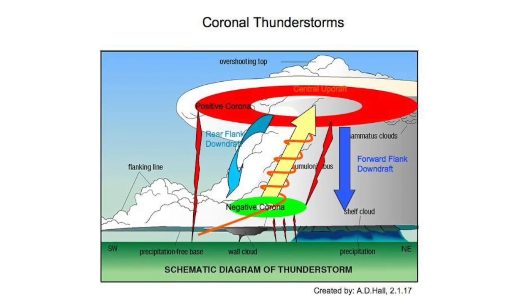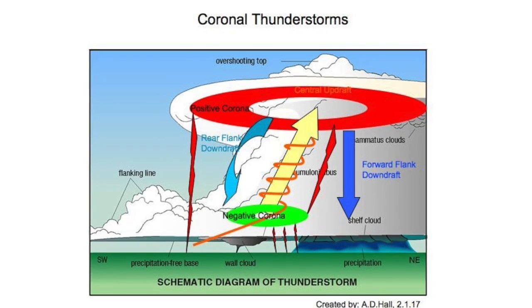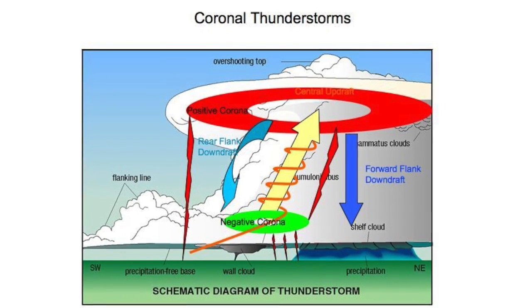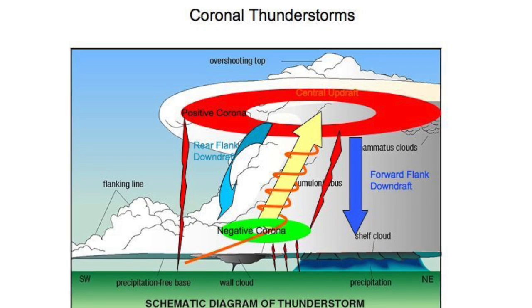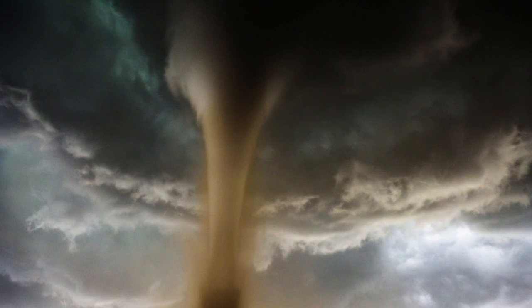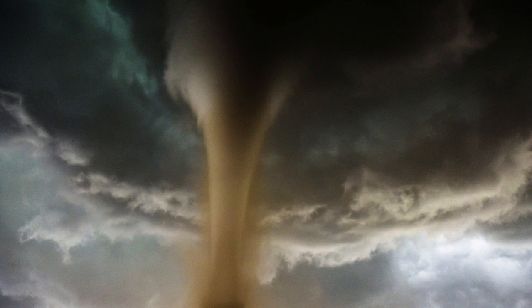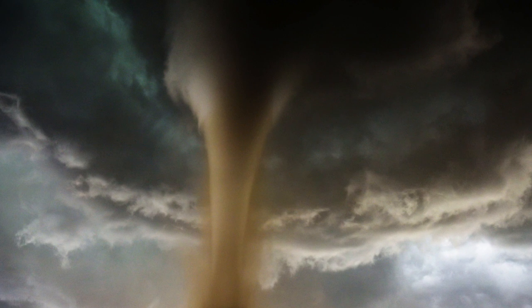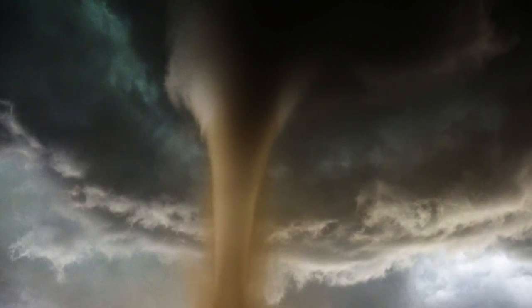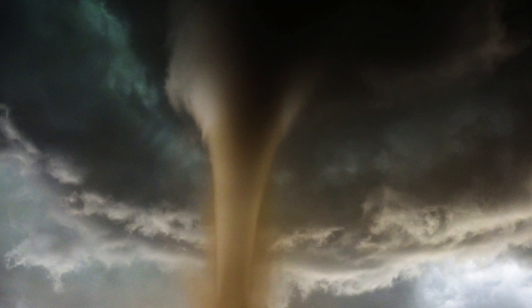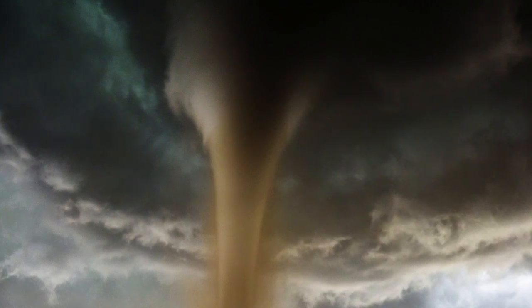It amplifies the field strength affecting the negative corona in the cloud base below, creating conditions necessary for tornadoes. The fact that cloud-to-ground lightning dissipates as a tornado spins up is evidence that the corona is part of a coherent electric circuit, where current in one region robs current from another.